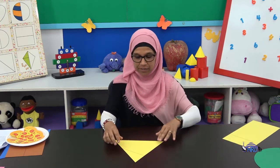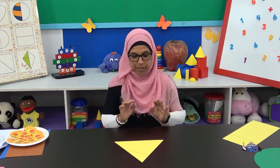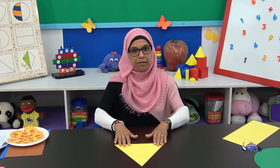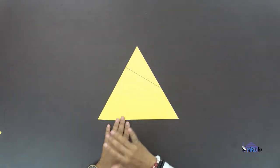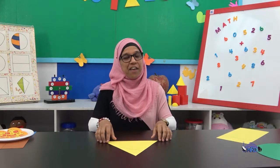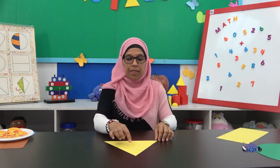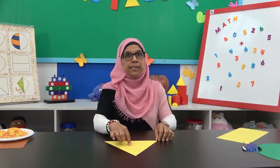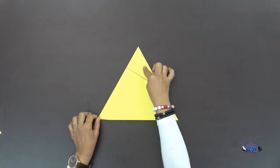We're going to deal with a triangle now. Let's look at our triangle. It's separated into two pieces. Are the pieces equal or unequal? Are they the same size? Well done — they are unequal. This piece is bigger than the piece over here.